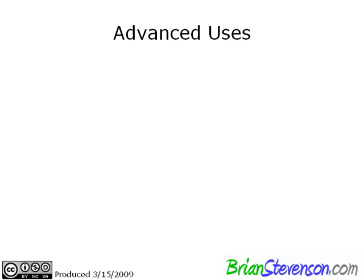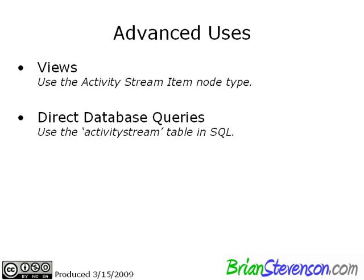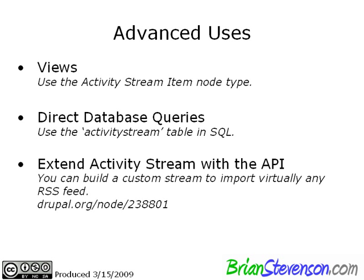Now let's talk about some of the advanced uses. Since everything is a node as far as activity stream items are concerned, you can use Views to access those nodes. You can also do direct database queries — there's an activity stream table, and you have access to things directly within that table. Finally, you can extend Activity Stream using their API. Some major social networking sites like MySpace don't yet have an API module, so it might be you that builds that — you're free to extend this module however you want.